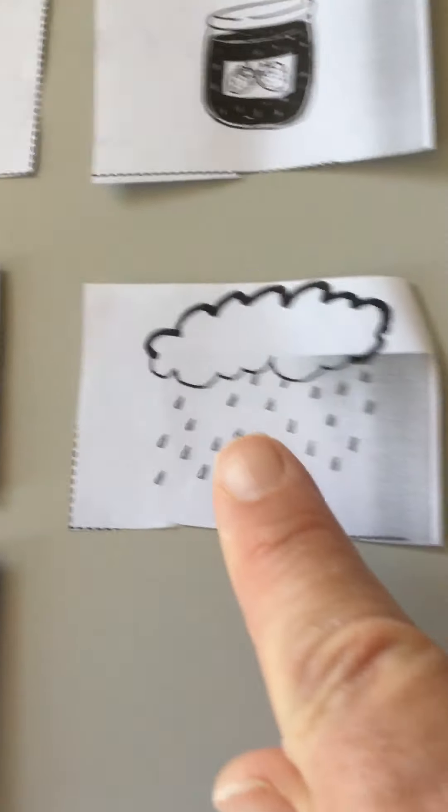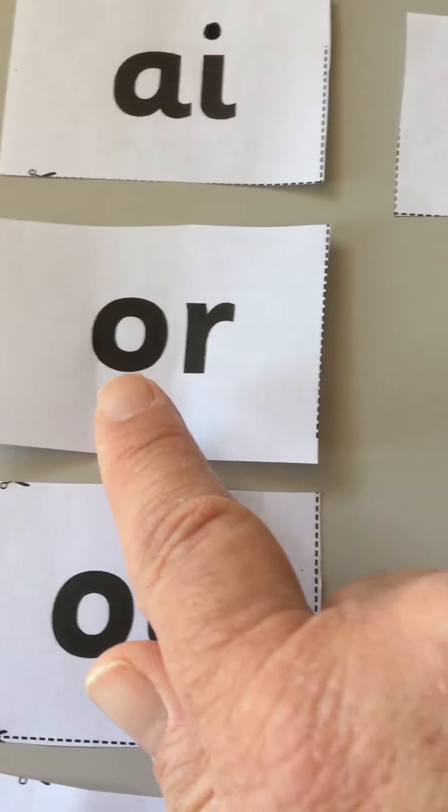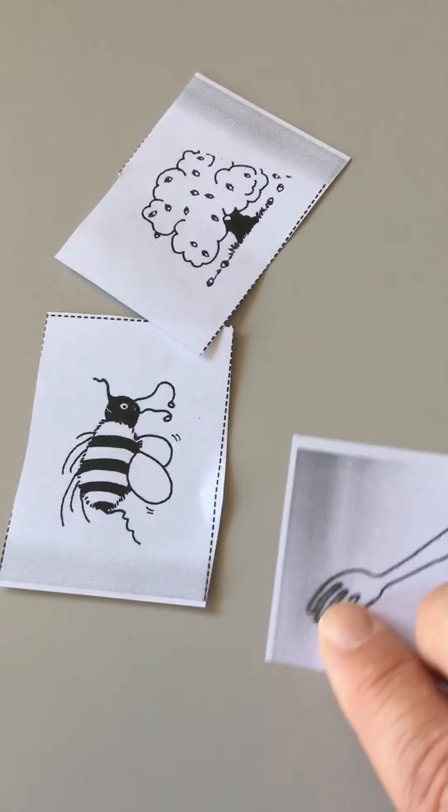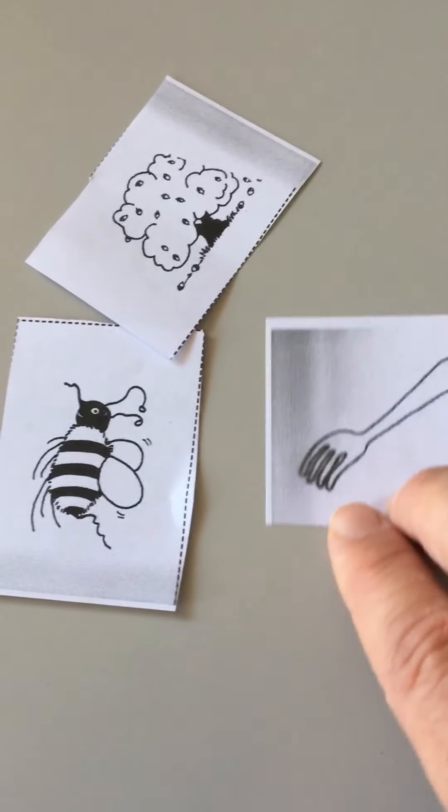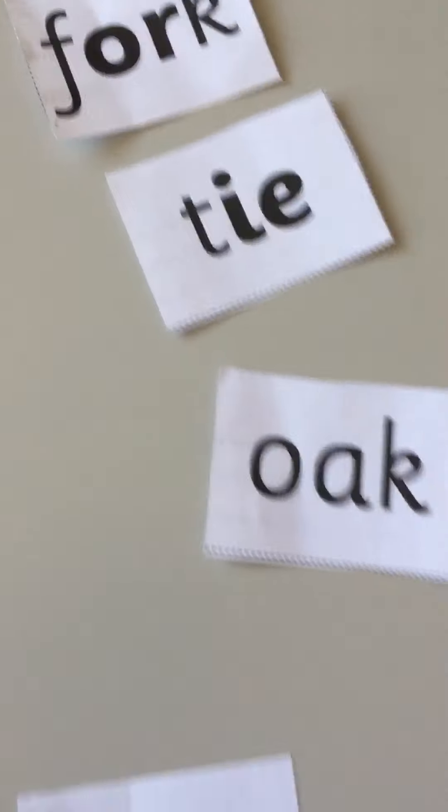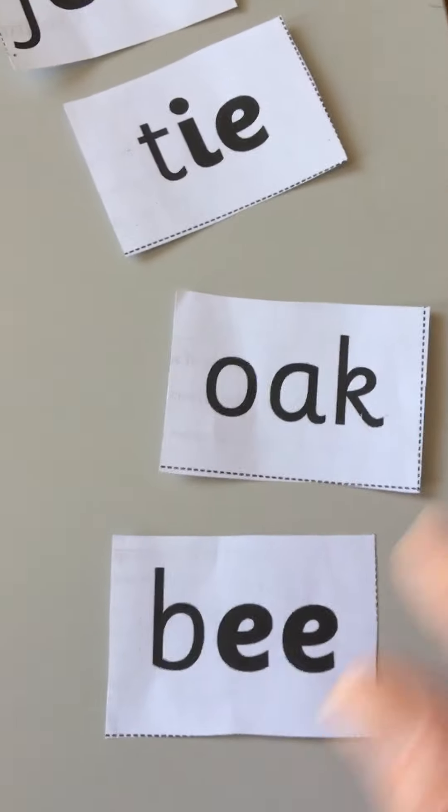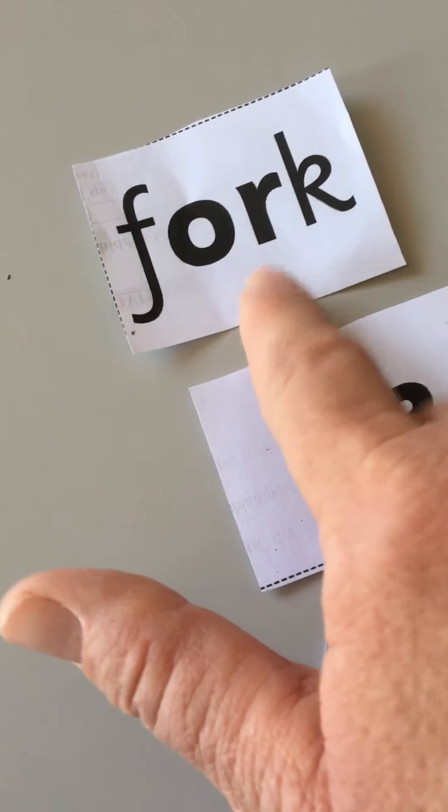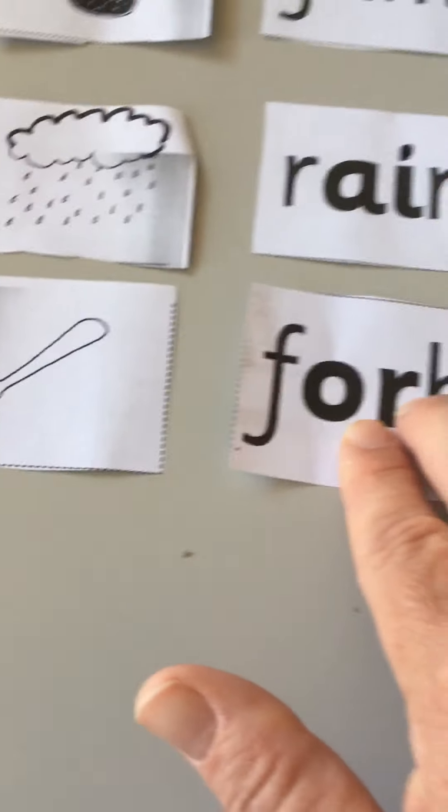R-A-I-N, rain. And for that one, our picture was a fork, F-O-R-K, because fork has this sound, OR. Let's come over here and look for the word with F-O-R. No, there it is, F-O-R-K, there we go.